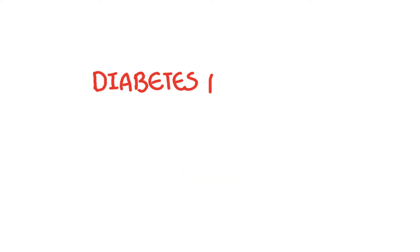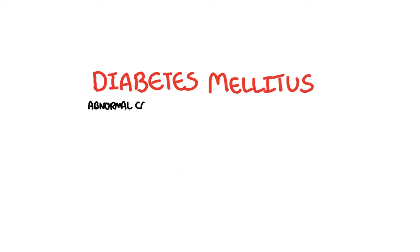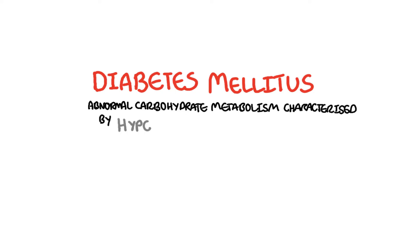Diabetes mellitus describes diseases of abnormal carbohydrate metabolism that are characterized by hyperglycemia, elevated blood glucose levels. Uncontrolled diabetes dramatically increases the risk of cardiovascular disease, kidney disease and nerve damage.